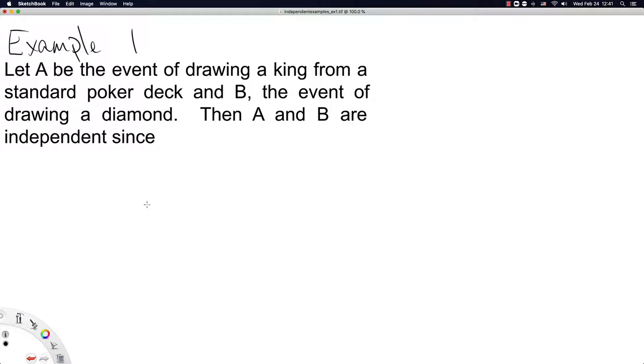Let A be the event of drawing a king from a standard poker deck and B the event of drawing a diamond. Then A and B are independent since this equation holds.